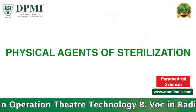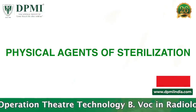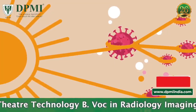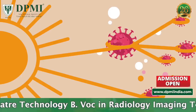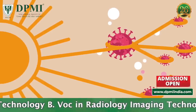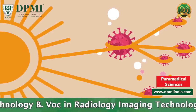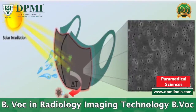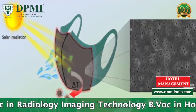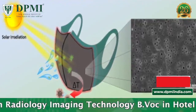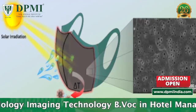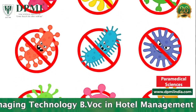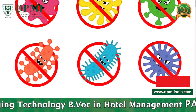Physical Agents of Sterilization: Sunlight has an active microbiocidal effect due to its content of UV rays. Drying — 70 to 80% of the weight of the bacterial cell is due to water, so drying has a deleterious effect on many bacteria.